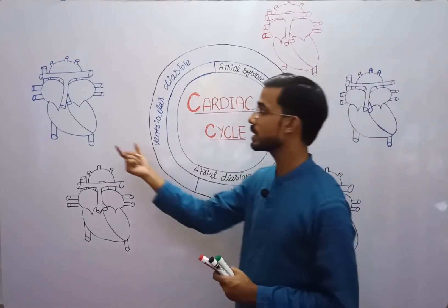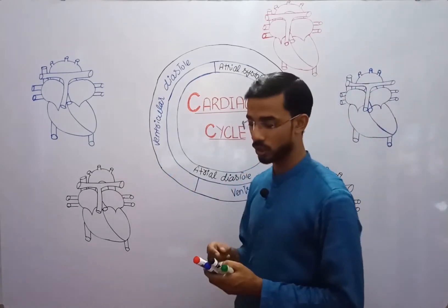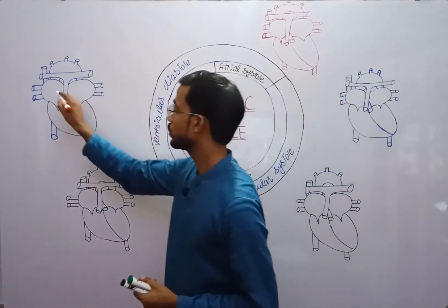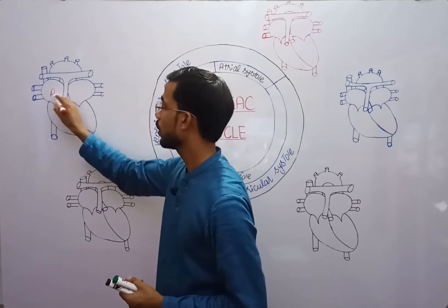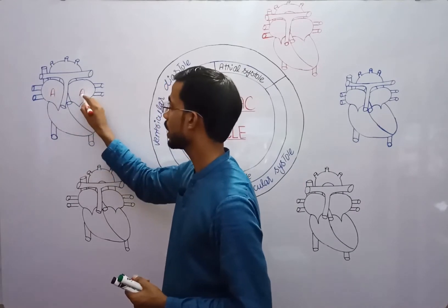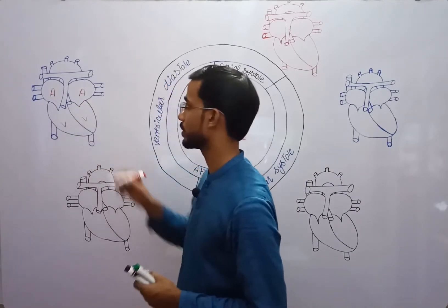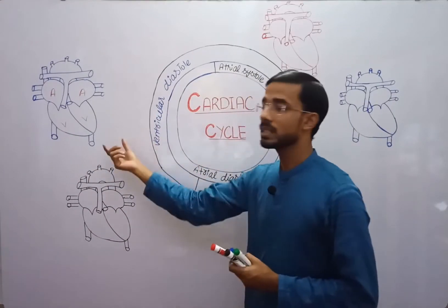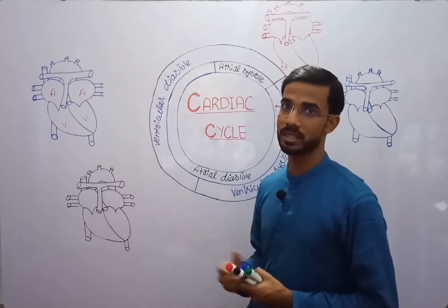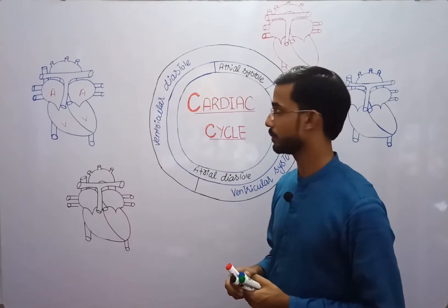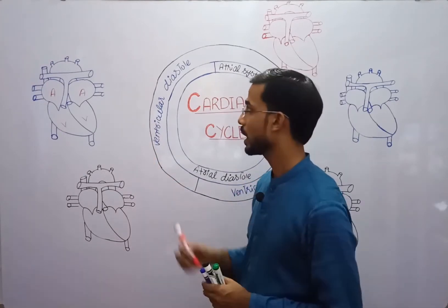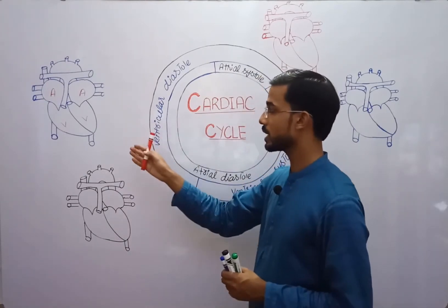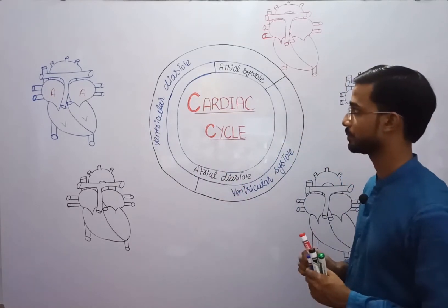Here you can see the structure of the heart, having two atria and two ventricles. This is the relaxed state of the heart. Now we compare this state with the cardiac cycle.